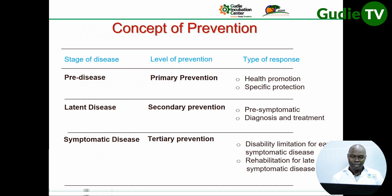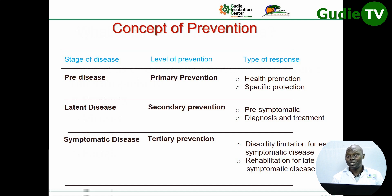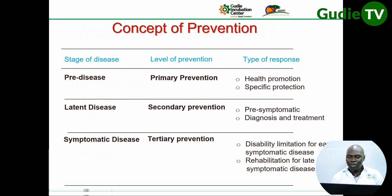In pre-disease, the level is primary prevention, and the response involves health promotion and specific protection. Using COVID-19 as an example: if you have not yet been exposed, you are at the pre-disease stage. Primary prevention here includes health promotion measures such as wearing masks, social distancing, not shaking hands, and avoiding overcrowding.